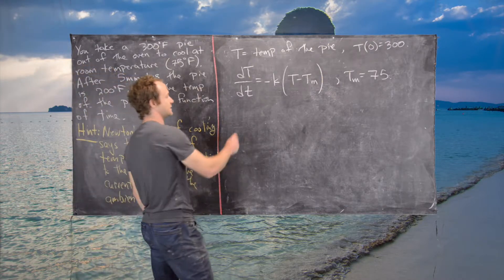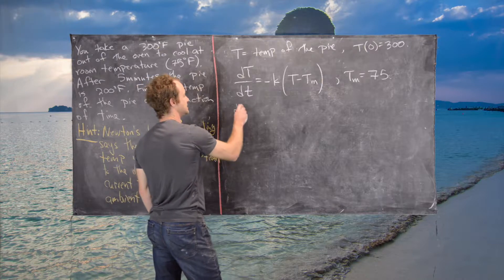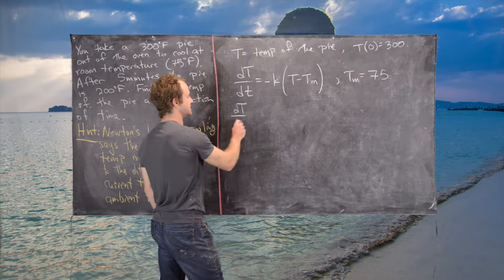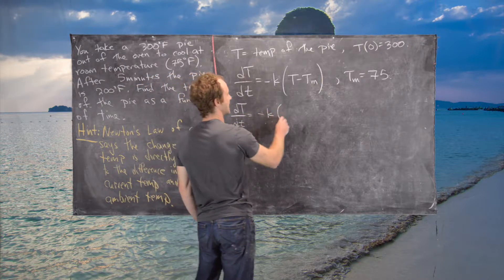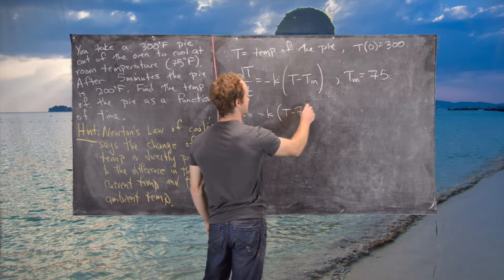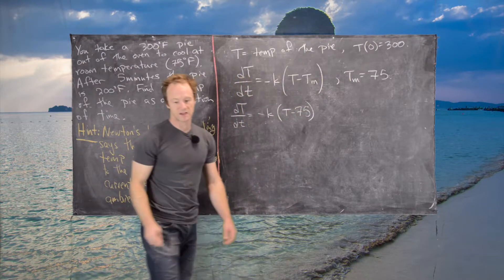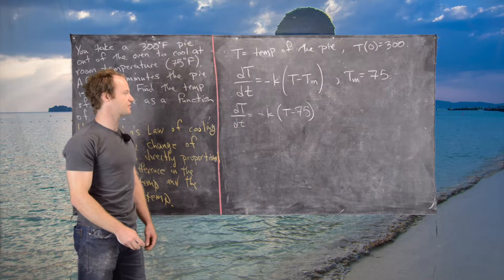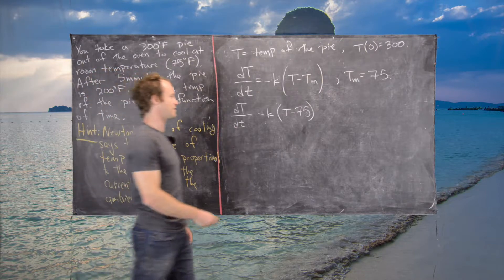So we have the differential equation dT/dt = -K(T - 75). Notice that's a separable differential equation, so we can use separation of variables.